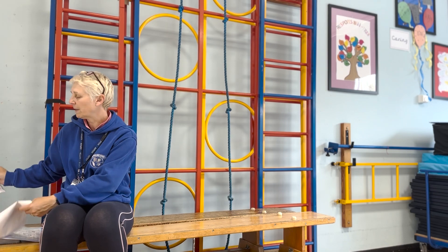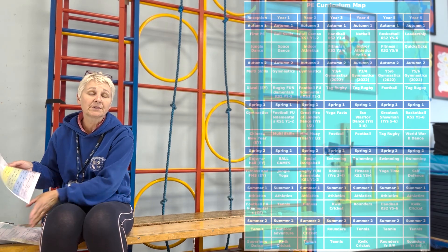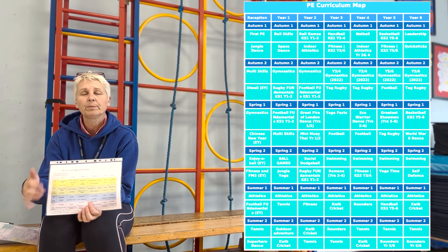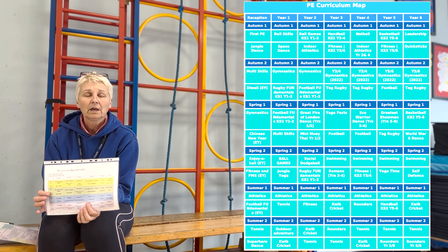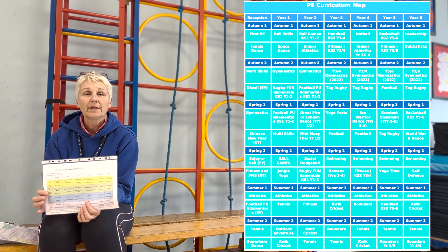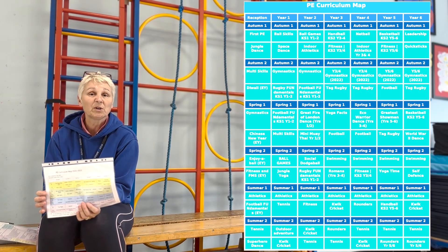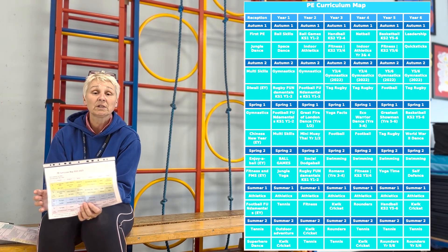Within each lesson we have two different activities each half term. The curriculum map is already there, and I didn't hesitate to show the inspectors my plans — this is an example of my annual plan. Each one is for six weeks; roughly each half term we change to two different activities.